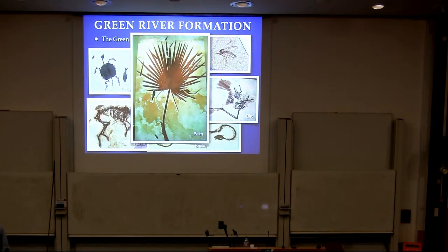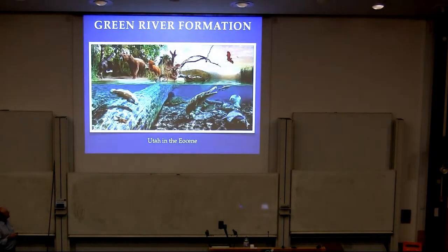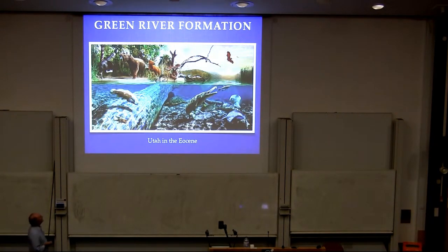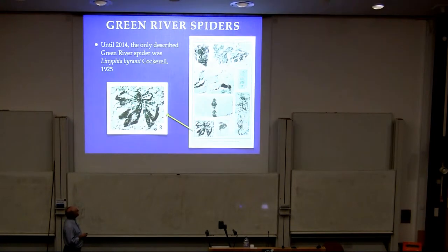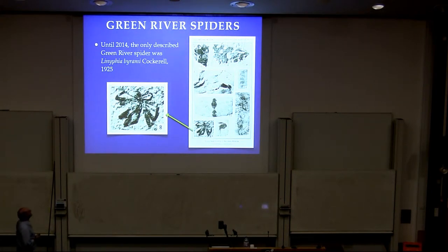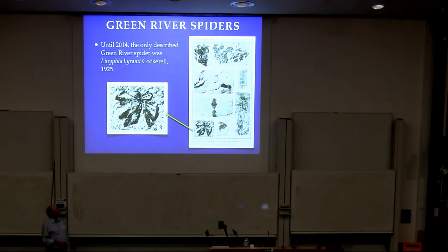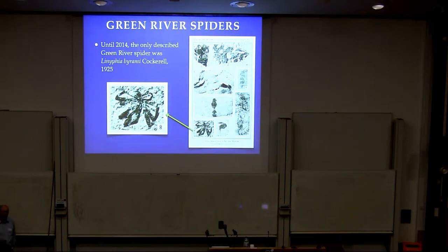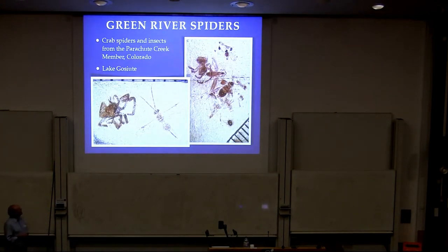But I'm going to look at the spiders. Up until very recently, there was one specimen described of a spider from the Green River Formation — Thistle minify pyromy. A minifier is a modern genus. All you can say about this is, it's a spider. But there are tens, indeed probably hundreds of specimens available to study, if only we had enough people to look at them all. So I looked at a few, and here are some examples.